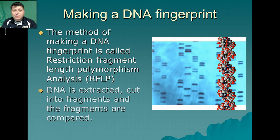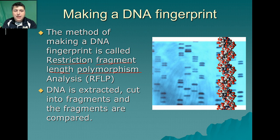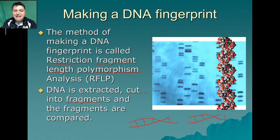The modern method of making a DNA fingerprint is called Restriction Fragment Length Polymorphism Analysis, which is a whole mouthful. Basically, what it boils down to is we're going to cut DNA into fragments — little tiny pieces. You would have your DNA strand and we're going to cut it into pieces, and those pieces will have many different sizes and shapes, giving us lots of different fragments.